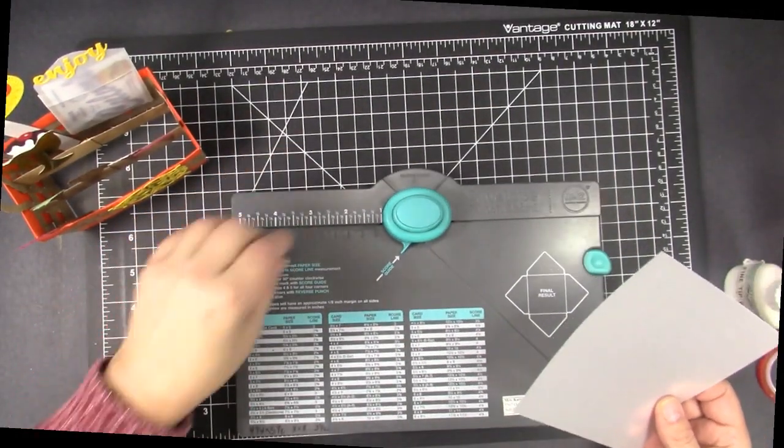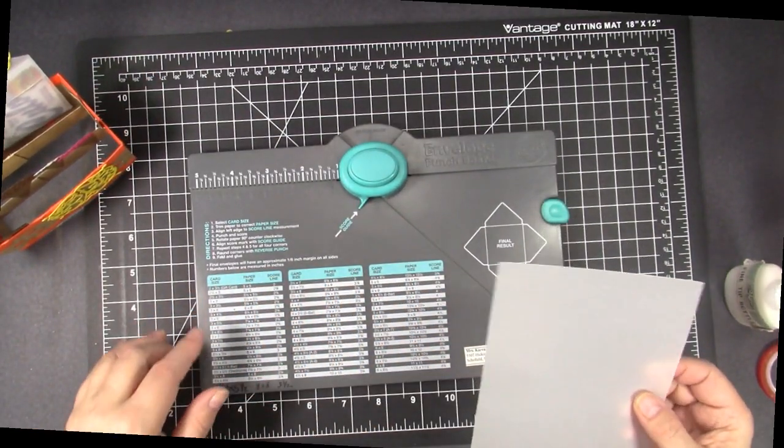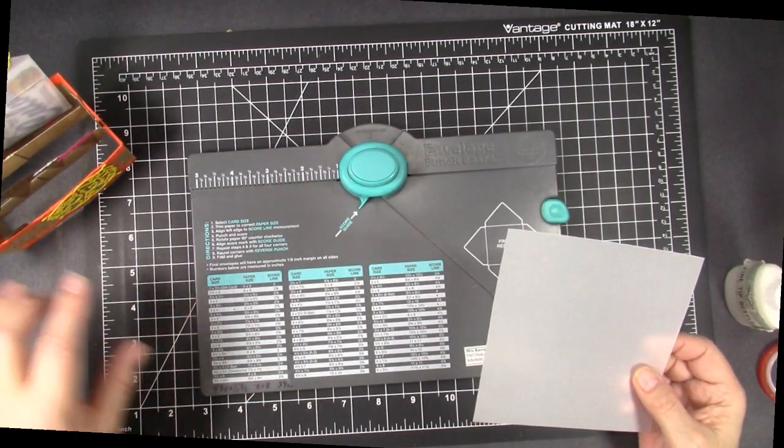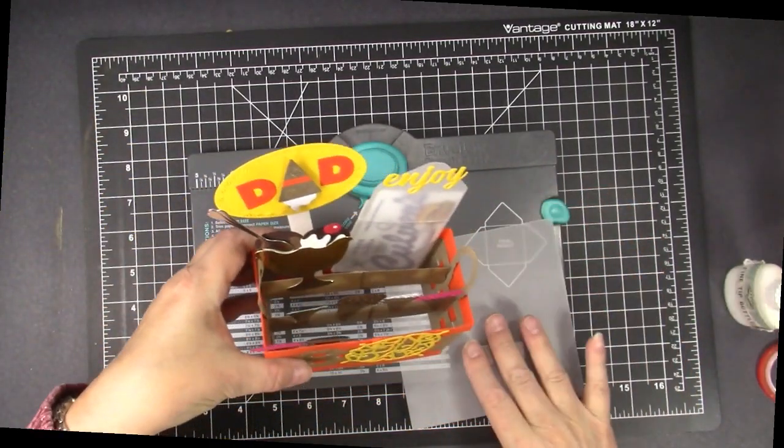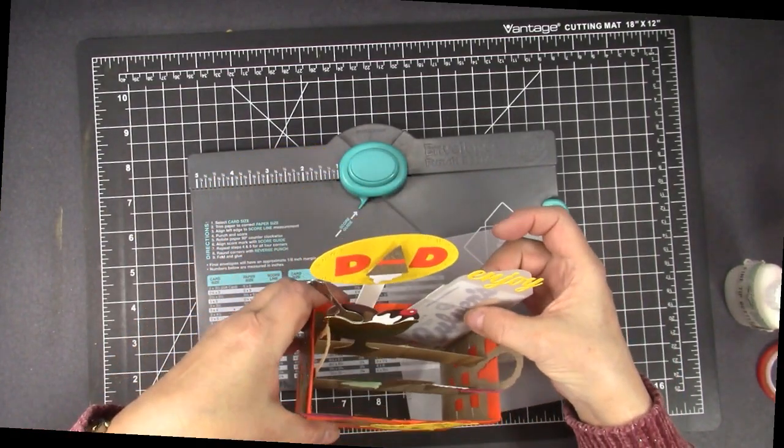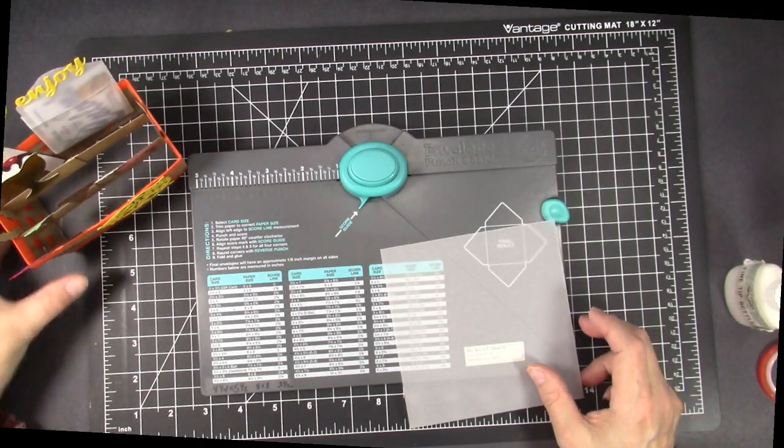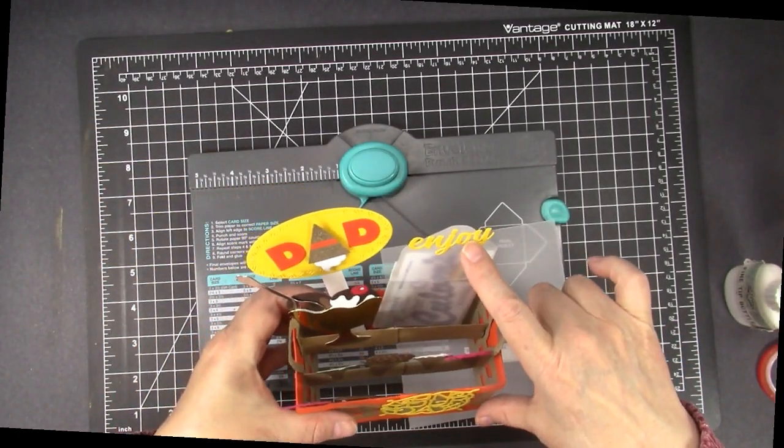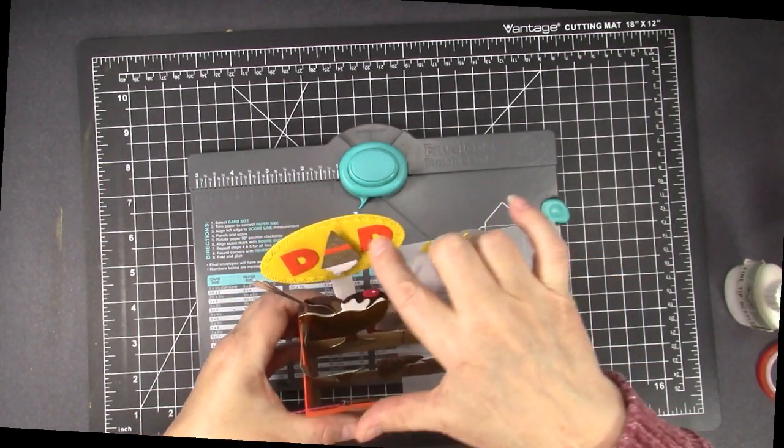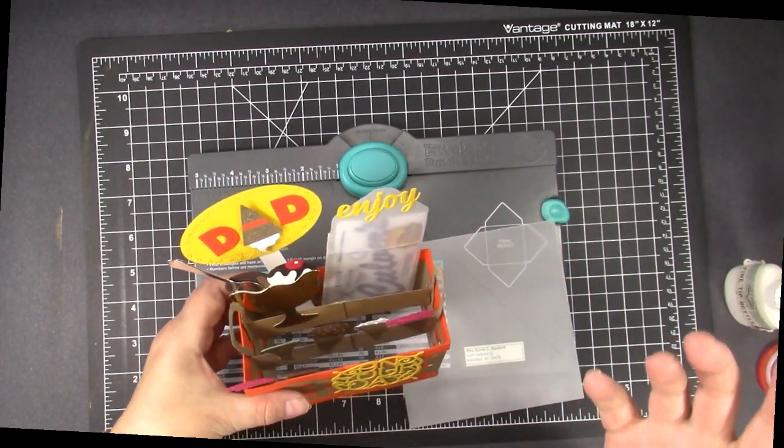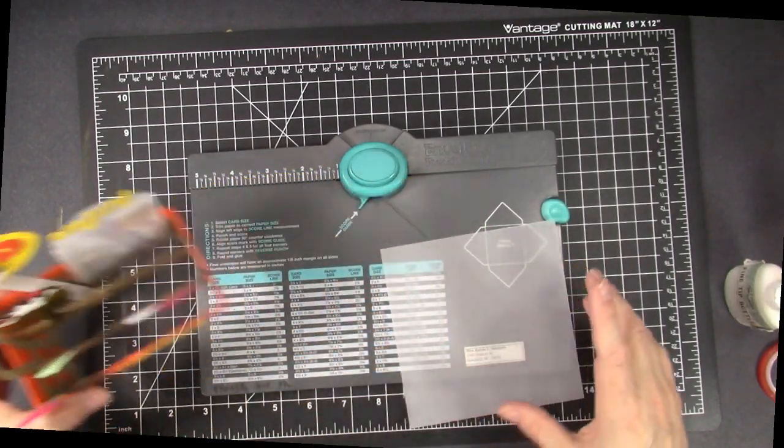I use the We Are Memory Keeper's Envelope Punch Board to make the gift card holder as you can see here and I decided to make it out of vellum so that you could see right through it and tell that it was a Culver's gift card in there. And this Enjoy is also a die from Karen Berniston and the Alphabet is as well. And again all the links to all these dies used will be in the description box for you.